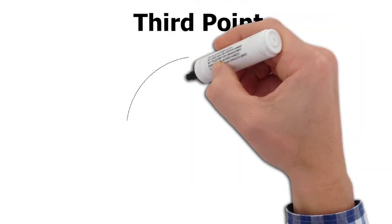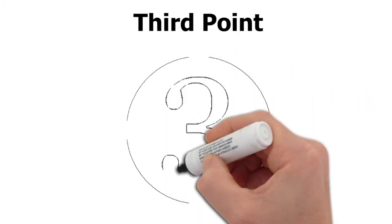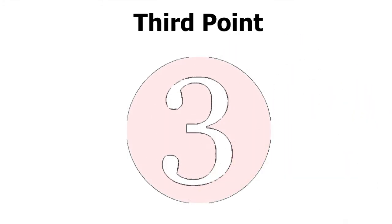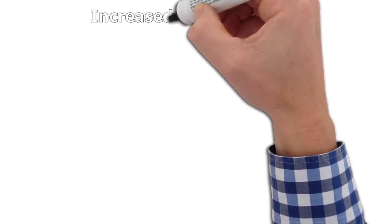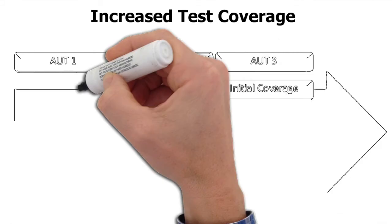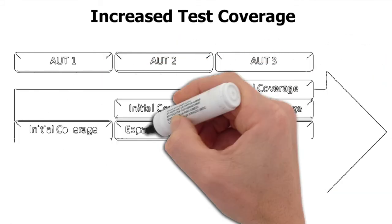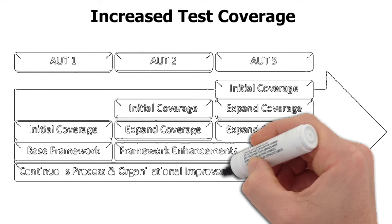Moving to the third point — automation increases test coverage. Let's see with an example how this happens.